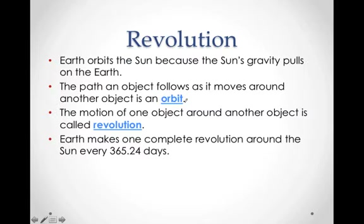The Earth orbits the sun because gravity pulls it in. The path that the Earth follows is called Earth's orbit. The motion of one object around another is called a revolution. So with the sun in the middle and the Earth out here going around it, this path it follows is its orbit, and as it moves around, we call that a revolution.